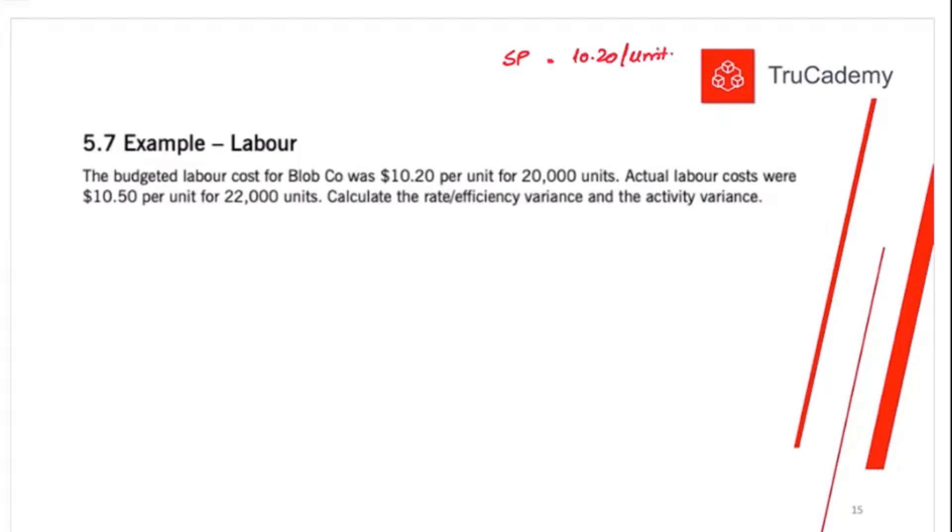Actual labor costs were $10.50. Budgeted activity is also given. Budgeted activity is labor was supposed to produce 20,000 units. Actual price is $10.50 per unit. This is actually what we paid to the labor to produce one unit. And then the actual activity is 22,000 units.